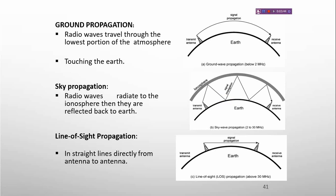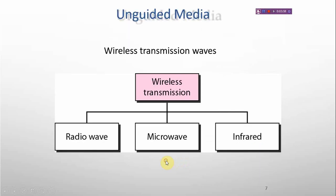Line-of-sight propagation means traveling in a straight line — directly from antenna to antenna in a straight line. That is known as line-of-sight propagation.